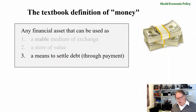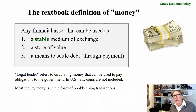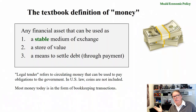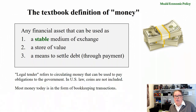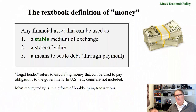You can't settle a debt by passing on your ownership of General Motors stock to someone else — they'll say sell the stock and give me money. The term legal tender refers to circulating money that can be used to pay obligations to the United States government. In the United States, coins are not included. So if you owe taxes to the IRS, you can't send them bags of pennies — coins are not legal tender in the United States.